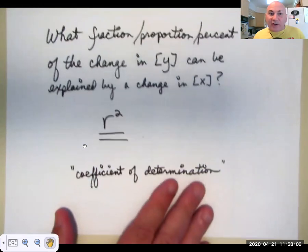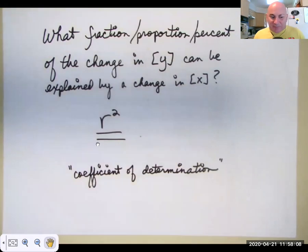And just for giggles, in case you ever come upon a professor who's really big on terms, R squared is the coefficient of determination. R is the correlation coefficient. R squared is the coefficient of determination.